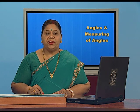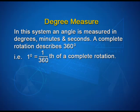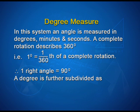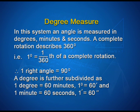We shall discuss the systems of measuring angles. First, degree measure. In this system, an angle is measured in degrees, minutes, and seconds. A complete rotation describes 360 degrees, that is, 1 degree is equal to 1/360th of a complete rotation. Therefore, one right angle is equal to 90 degrees. A degree is further subdivided: 1 degree is equal to 60 minutes, and 1 minute is equal to 60 seconds.